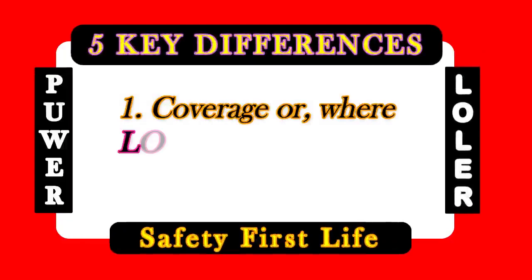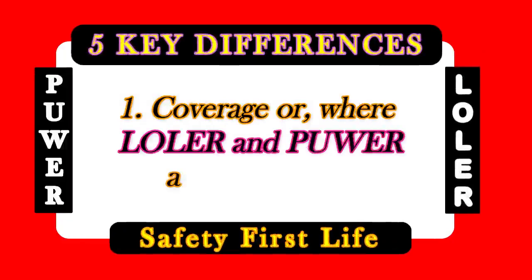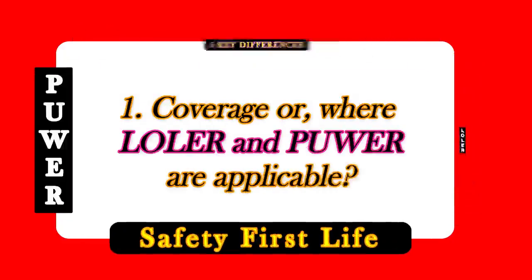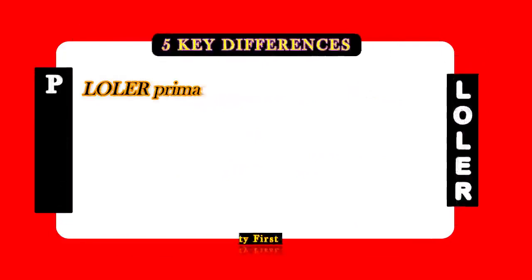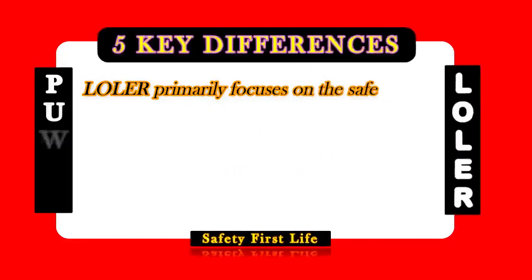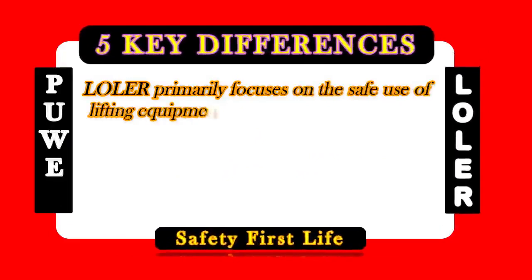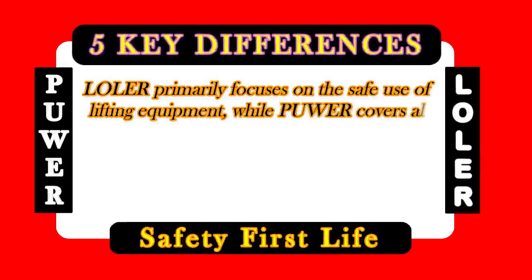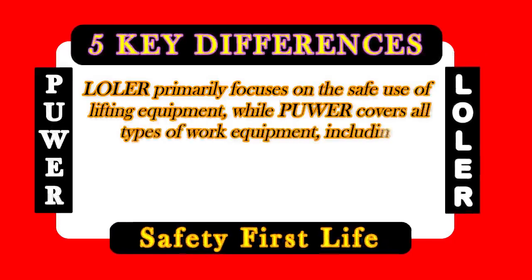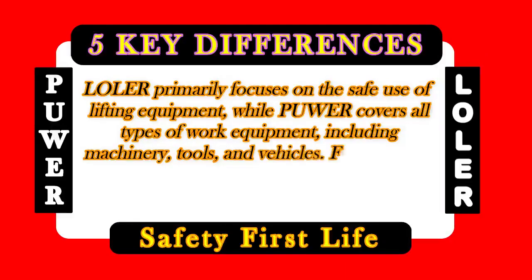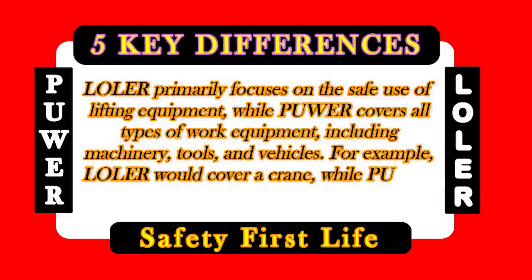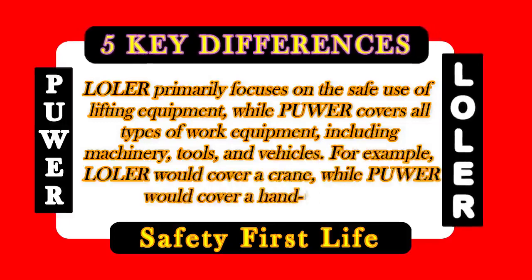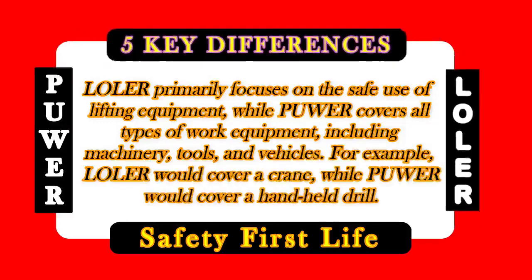Difference 1: Coverage — where LOLER or PUWER are applicable. LOLER primarily focuses on the safe use of lifting equipment, while PUWER covers all types of work equipment, including machinery, tools, and vehicles. For example, LOLER would cover a crane, while PUWER covers a hand-held drill.